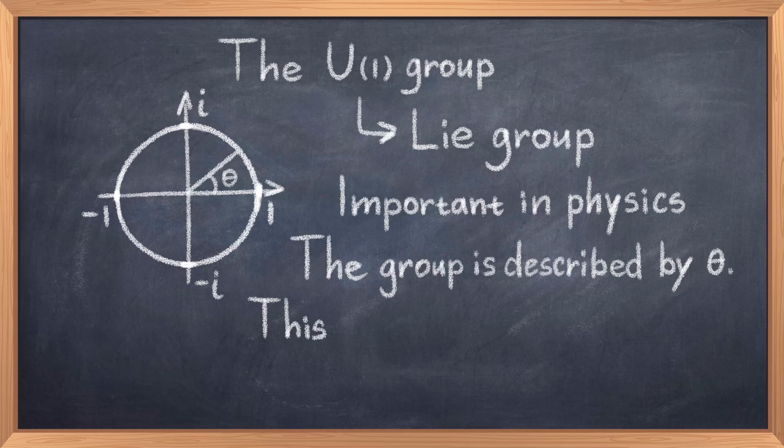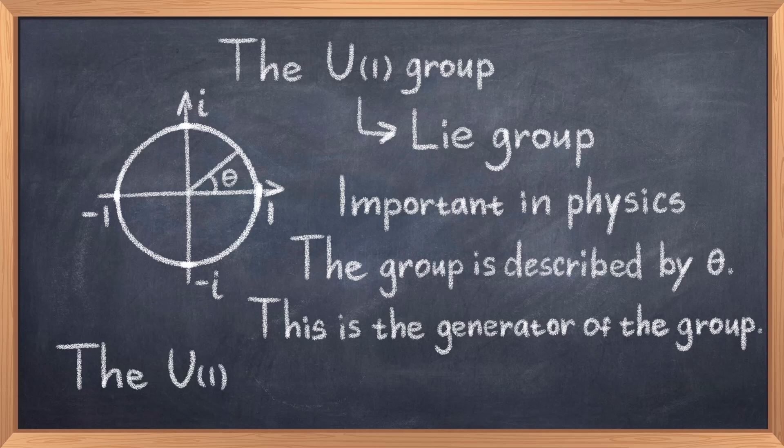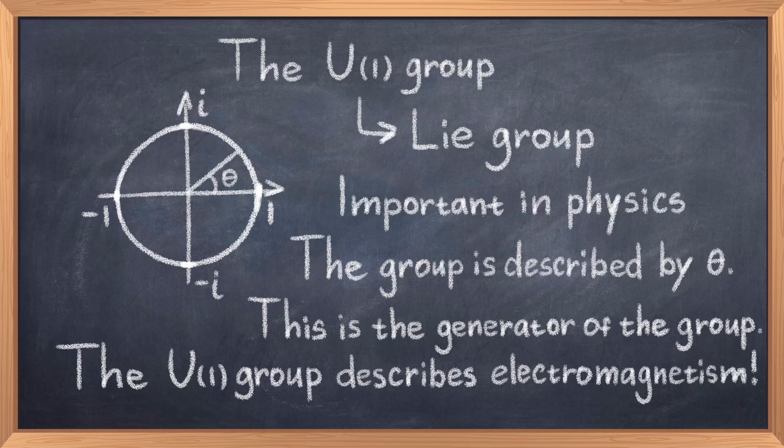This group is very important in physics, as it turns out that this group forms the structure of electromagnetism. When we look at the transformations of the electromagnetic field, we use the generator of the U(1) group. What is very interesting here is that the generators of groups turn into particles, which are the force carriers. Thus the one generator of the U(1) group, which forms the electromagnetic force, this one generator becomes the photon, which is the electromagnetic force carrier.